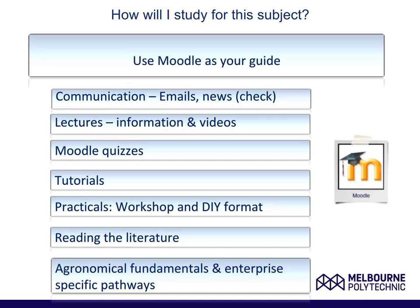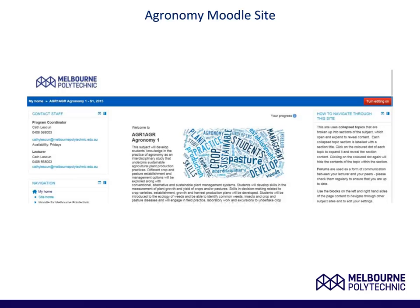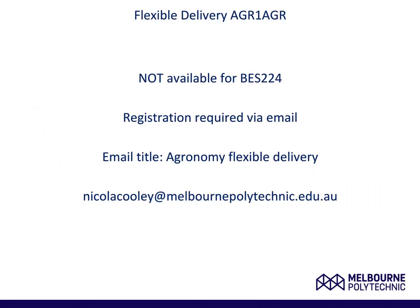There are a number of readings associated with this subject. I have included a snapshot of the agronomical site on the Moodle webpage. For studying the subject AGR1 as part of the Bachelor of Agriculture and Technology, you may do this subject as a flexible delivery pathway. Please note this pathway is not available for students in the Equine Studies degree studying subject BES 224.